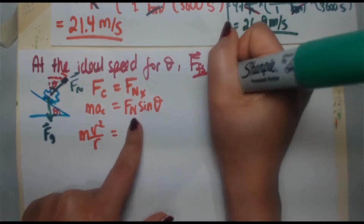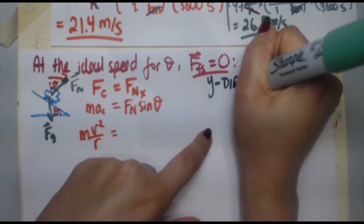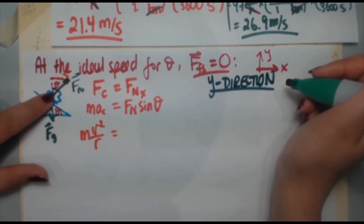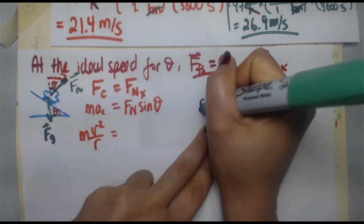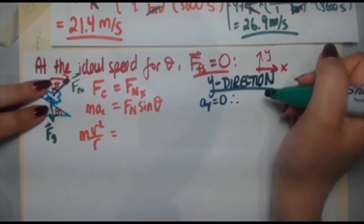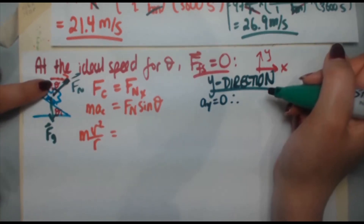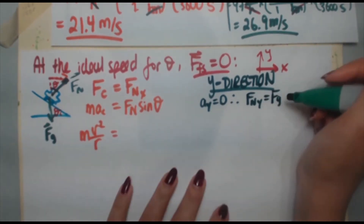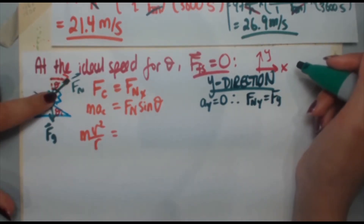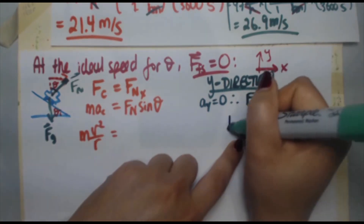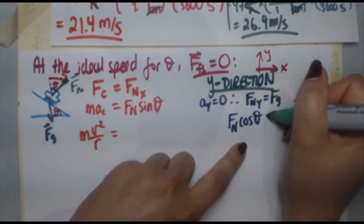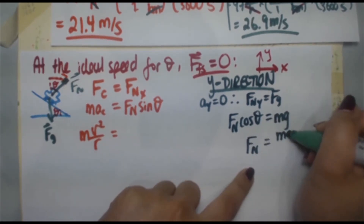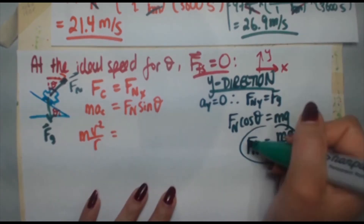We need to find FN, so let's look at the y direction. In the y direction, acceleration equals zero — the car isn't jumping up and down — so the upward force equals the downward force: FNy = Fg. FNy equals the hypotenuse times cosine of the angle, so FN cosθ = mg, which gives FN = mg / cosθ.